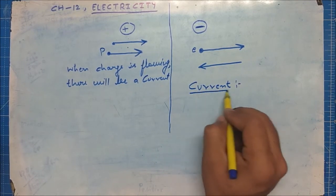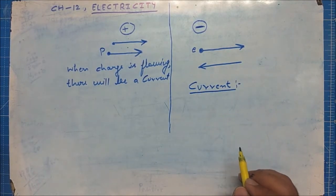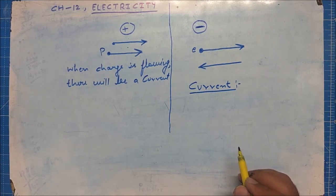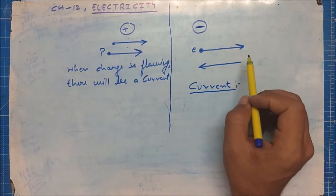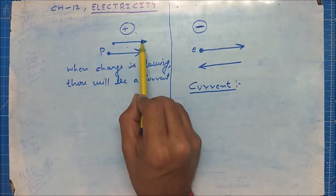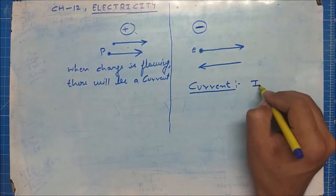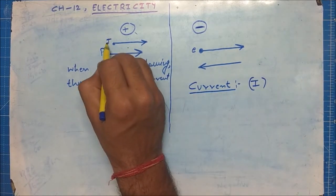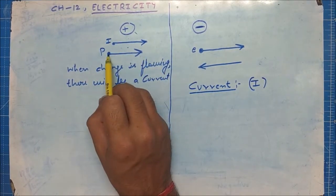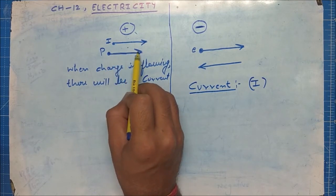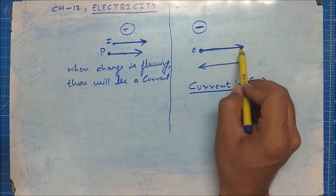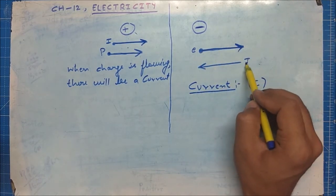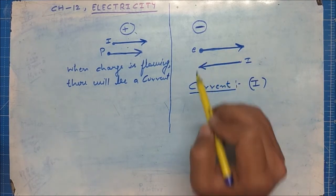So we have seen what current is. The flow of charge is called current. We represent current with the symbol I. If we have a positive charge and the direction of charge flow is this way, then the direction of current will be the same. But if we have a negative charge flowing in this direction, then the direction of current will be opposite to the flow of charge.